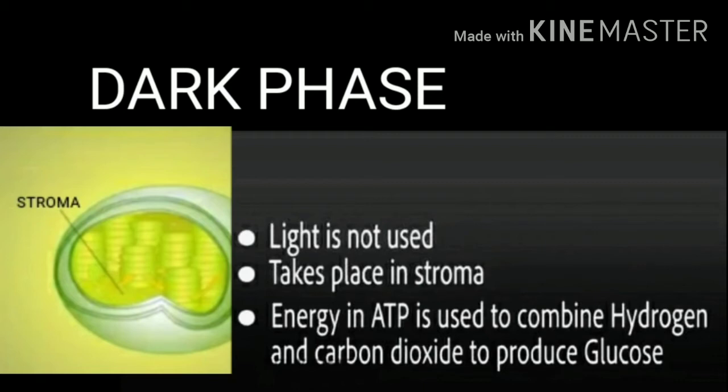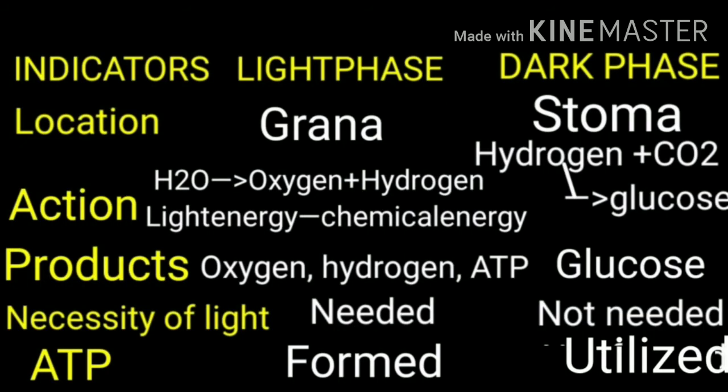Let's compare what we learned about the light phase and dark phase. The light phase occurs in the grana, and the dark phase occurs in the stroma. In the light phase, water molecules split into oxygen and hydrogen, and light energy is converted to chemical energy to form ATP. In the dark phase, hydrogen is combined with carbon dioxide to form glucose.